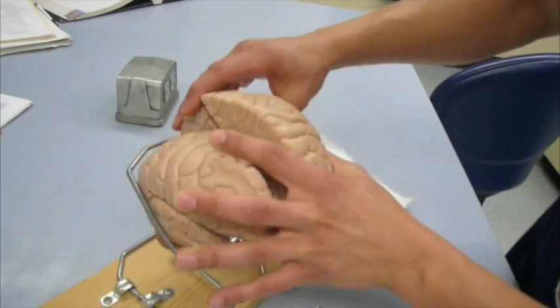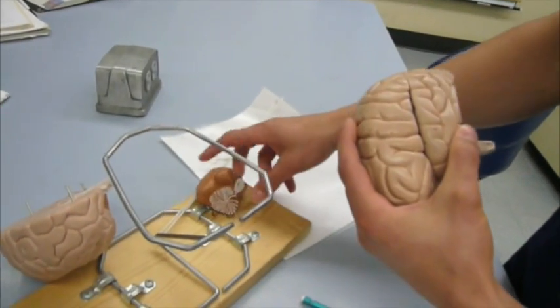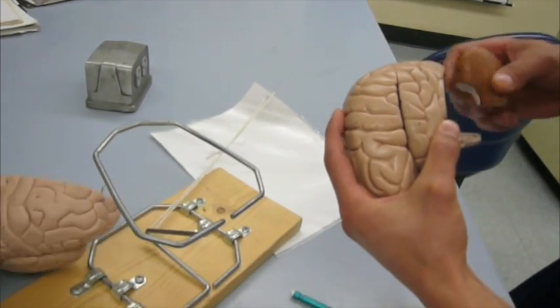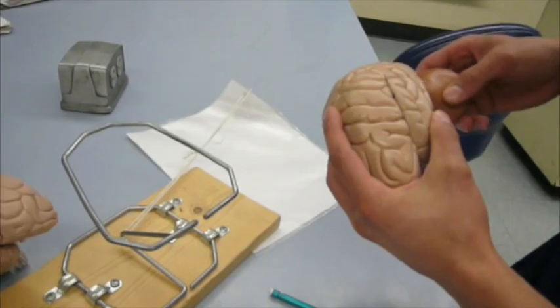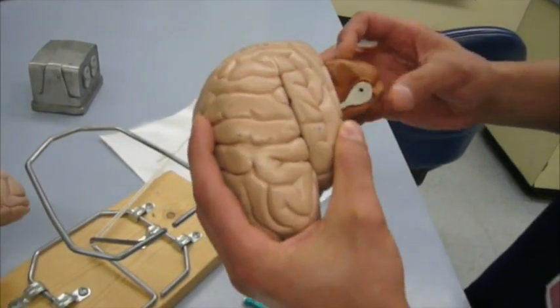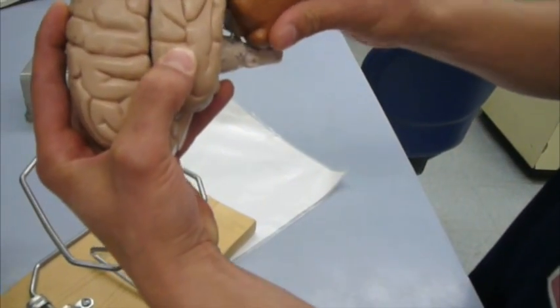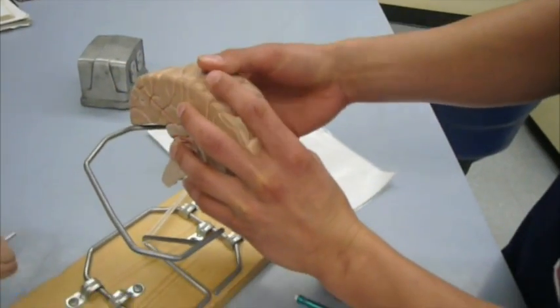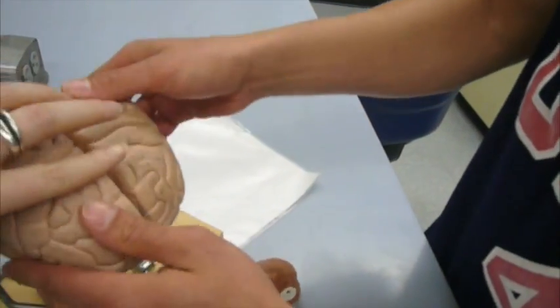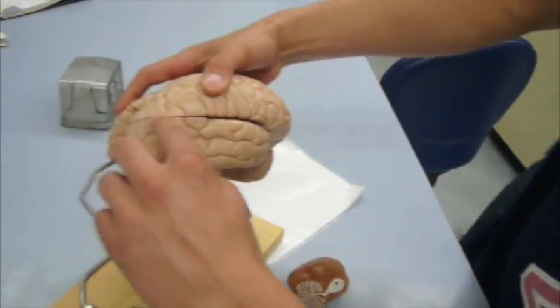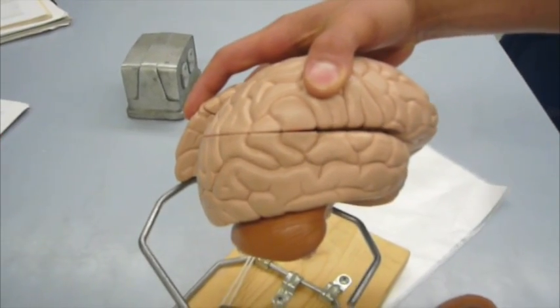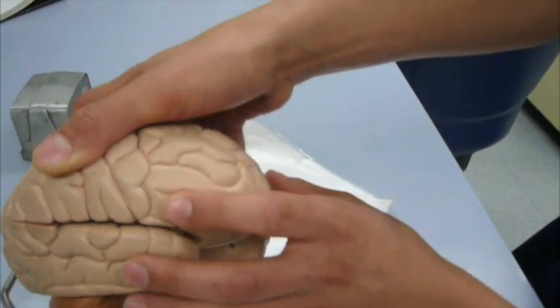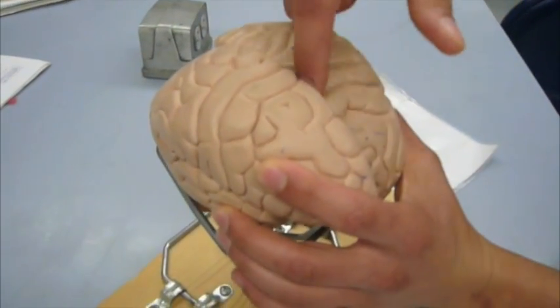We have the transverse fissure, which separates the occipital lobe from the cerebellum. It's going to be right here. Transverse fissure. We have the lateral sulcus right here. We have the longitudinal fissure, right here.